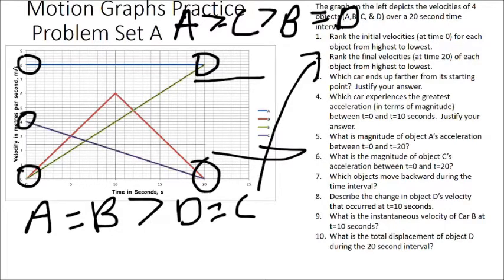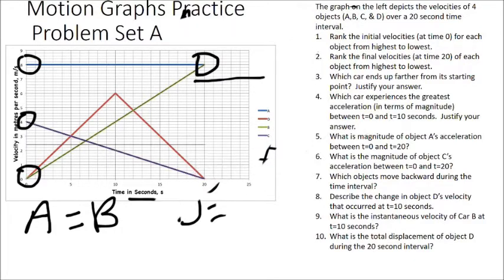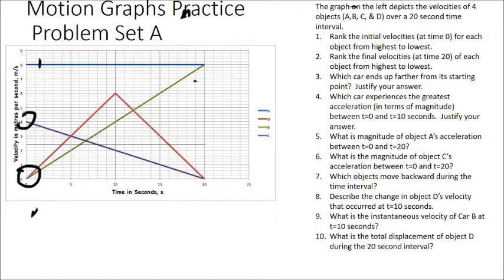Now let's look at problems three and four. For problem three, which car ends up further from its starting point? Here we're looking for displacement — the change in an object's position. On a velocity-time graph, to find displacement, you have to calculate the area under the velocity-time curve. The easiest way to do that in an Algebra 1-based physics class is to take the area under the curve, break it into geometrical shapes, and then calculate those areas.